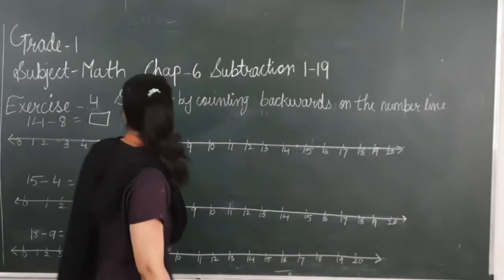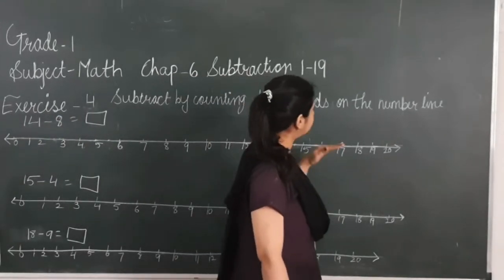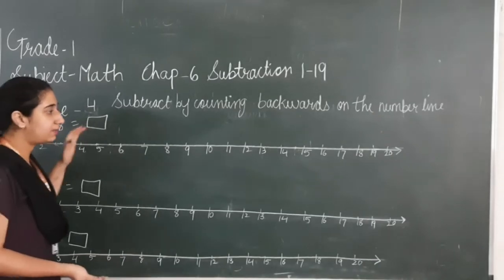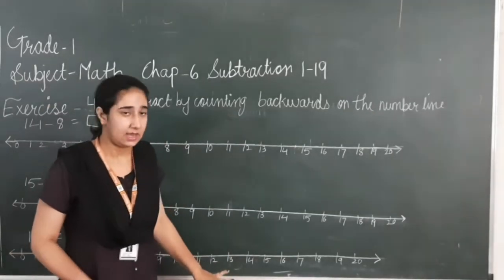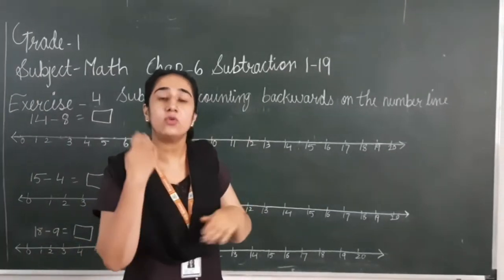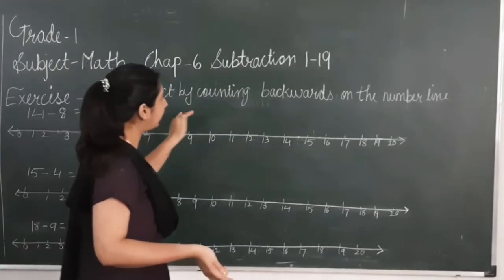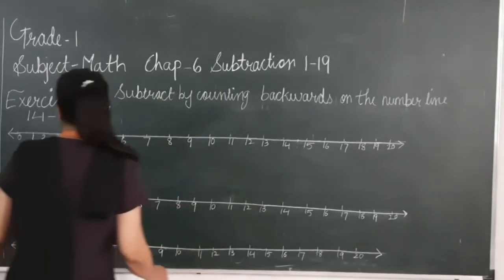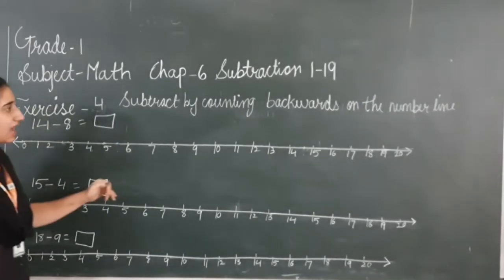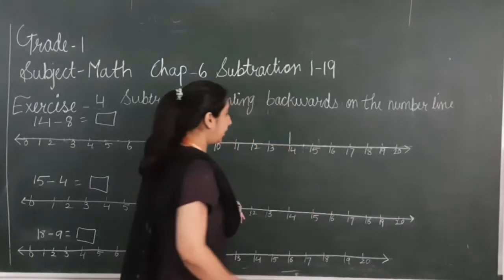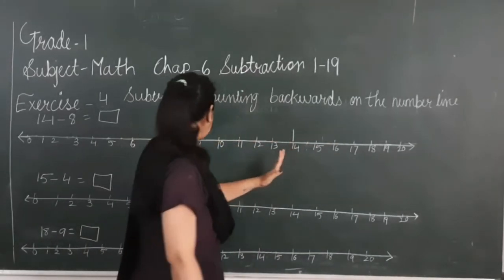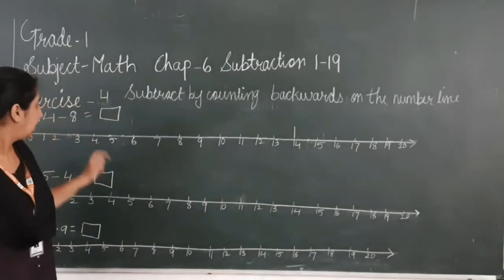Our next topic is: Subtract by counting backwards on the number line. These are called number lines. We have to subtract by using these number lines. As I have already told you, we count backward in subtraction. In addition, we count forward. So here, as we are doing subtraction sums, we will count backwards. Let's start. 14 minus 8. We have to subtract 8 from 14. We will start from 14. We have to walk 8 steps backwards.